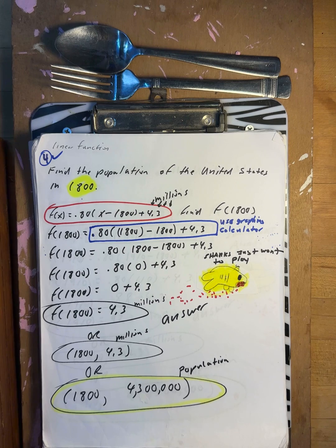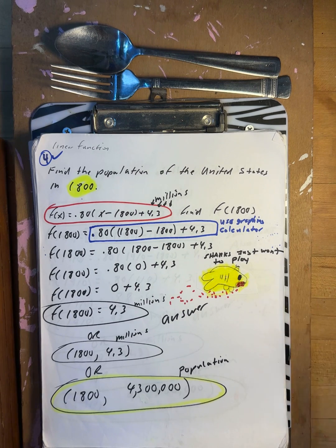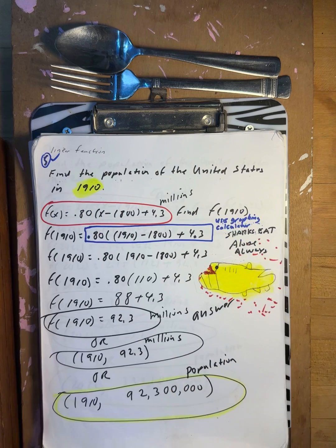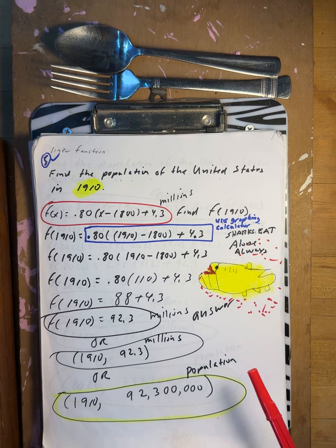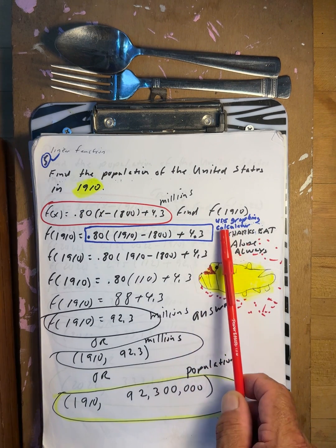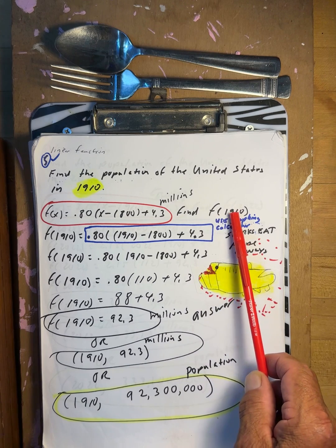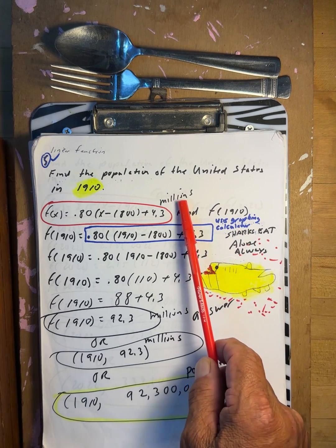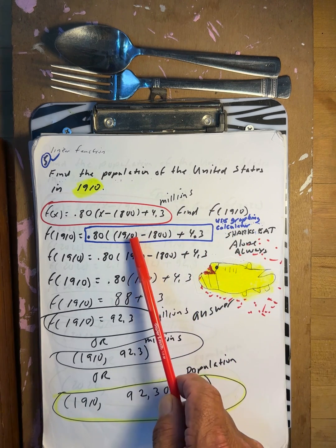In 1800, there were four million, three hundred thousand people in the United States. Next, find the population of the United States in 1910.